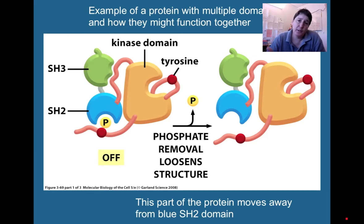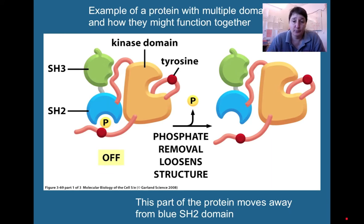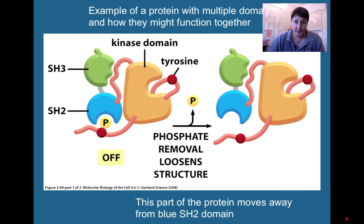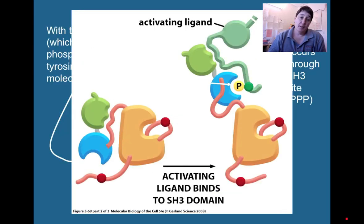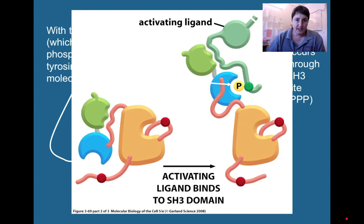If this protein gets dephosphorylated by a phosphatase, that means it's going to take a phosphate group off—in this case, off the phosphorylated tyrosine. Now the SH2 domain can no longer bind to the phosphorylated tyrosine because it's not phosphorylated. So the protein begins to change shape—changing the structure changes the function. On the bottom left, the protein no longer holds its fold; it's going to start to unfold.